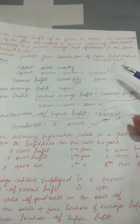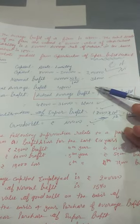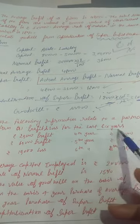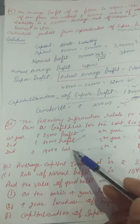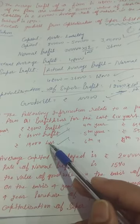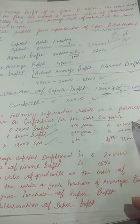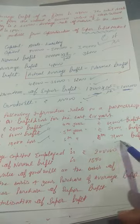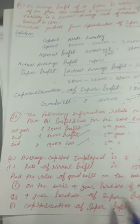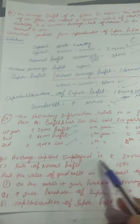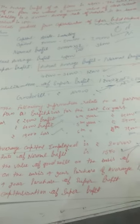So in the super profit capitalization method, first we calculated the super profit. Now question number 20: the following information is related to a partnership firm for the last six years — profits in years 1, 2, 3 are 20,000 each; year 4 is 60,000 profit; year 5 is 50,000 profit; year 6 is 70,000 profit. Average capital employed is 2 lakh and normal rate of return is 15%.